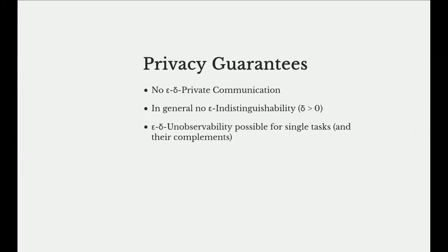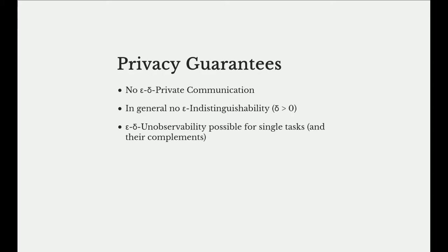In the paper we prove that naive exponential dummies does not provide epsilon-delta private communication at all — it's impossible. In general we also do not have epsilon-indistinguishability where delta is zero; instead we have a value of delta larger than zero in the general case. However, we can prove that for some cases — for example single tasks comprising a single interaction — naive exponential dummies offers epsilon-delta unobservability for those tasks and their complements.